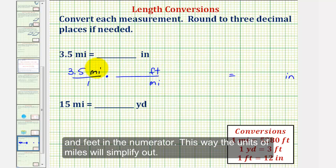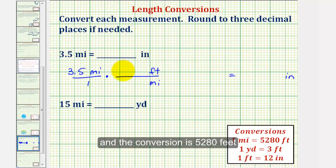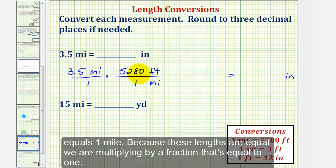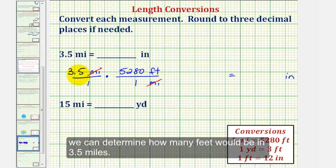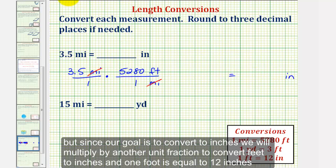Notice this way the units of miles will simplify out. The conversion is 5,280 feet equals one mile. Because these lengths are equal, we're multiplying by a fraction that's equal to one. Notice how miles simplifies out. Since our goal is to convert to inches, we'll multiply by another unit fraction to convert feet to inches.